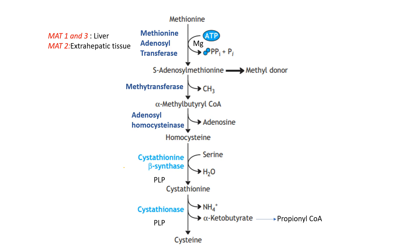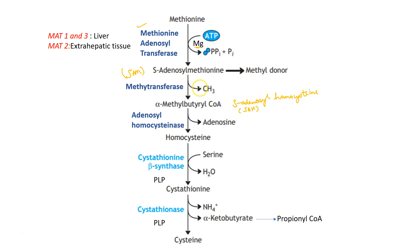Coming on to the metabolism of the sulfur-containing amino acids. The first reaction is conversion of methionine to SAM or S-adenosyl methionine, which then forms S-adenosyl homocysteine. Methionine to SAM occurs with the help of enzyme MAT, methionine adenosyl transferase, which has three isoforms. MAT 1 and 3 are found in liver whereas MAT 2 occurs in the extra-hepatic tissue. This enzyme requires ATP and cofactor magnesium.